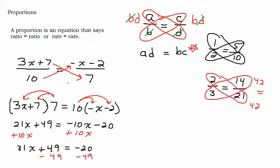And then I'll write my answer over here. Keep going over here. What do we got? 31x equals negative 69. Divide both sides by 31.